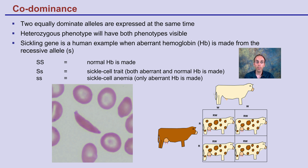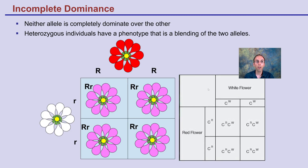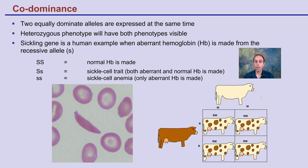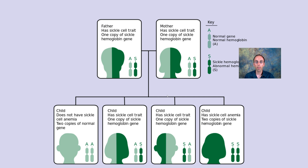Unlike incomplete dominance, where we have a blending, co-dominance gives us an expression of both alleles. With the sickle cell trait, we see the sickle cell gene expressed alongside normal red blood cells simultaneously.